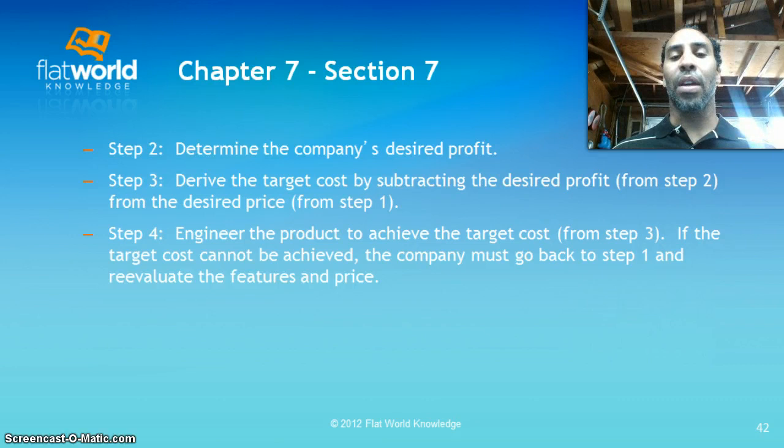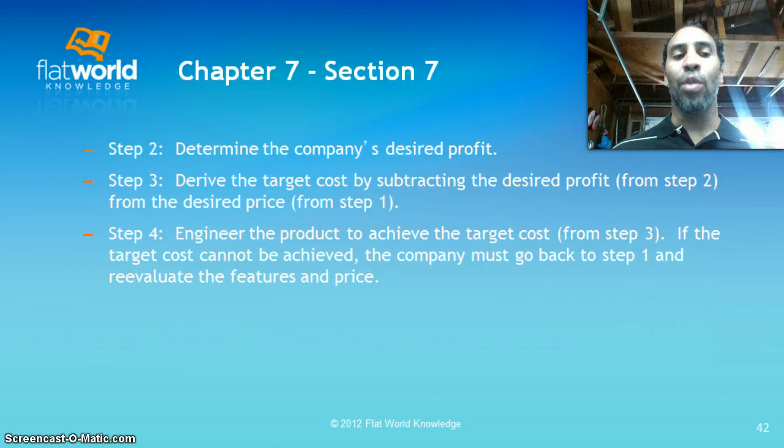Step four brings another part of the company into the fold: engineer the product to achieve the target cost from step three. If the target cost cannot be achieved, the company must go back to step one and reevaluate the features and price. In real business it's never simply one, two, three, four — you often cycle back to step one multiple times before finding where you'll ultimately land.